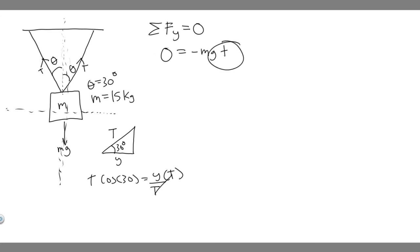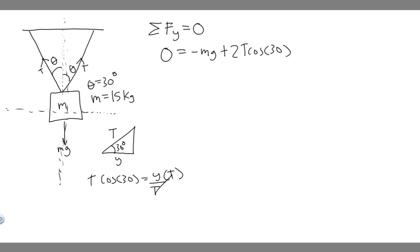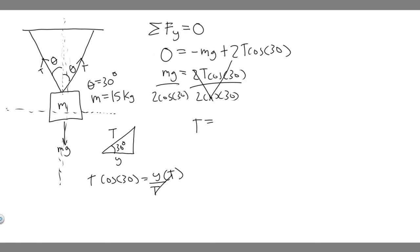So when we write the sum of the forces in the y-direction, we have negative mg plus 2T times cosine of 30 equals zero. Notice that T is in this equation, so we can solve for it. Adding mg to both sides gives mg equals 2T times cosine of 30. Dividing both sides by 2 times cosine of 30, we get T equals mg over 2 times cosine of 30.